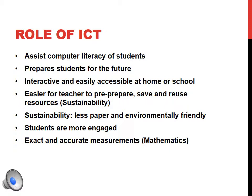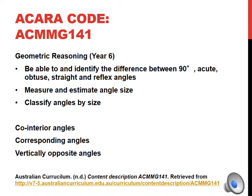The ACARA code I'm basing this demonstration on is ACMMG141 — geometric reasoning for Year 6. Students need to be able to identify the difference between 90-degree, acute, obtuse, straight and reflex angles, measure and estimate angle size, classify angles by their size, and understand co-interior angles, corresponding angles and vertically opposite angles.